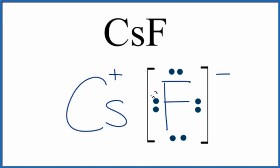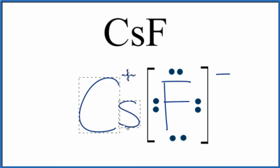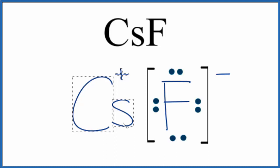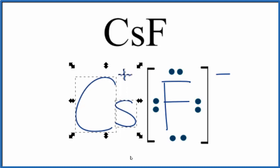These electrons are not being shared. This is the Lewis structure for CsF. Since we have a positive ion and a negative ion, they're attracted to each other due to opposite charges, which is why we have the ionic bond. Note that this Lewis structure for cesium fluoride is what we call a formula unit.